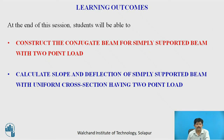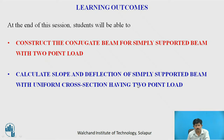The learning outcome of today's lecture is: the student will be able to construct the conjugate beam for a simply supported beam with two point loads. They will also be able to calculate slope and deflection of the simply supported beam with two point loads having uniform cross-section area.